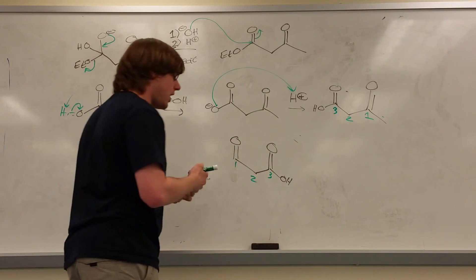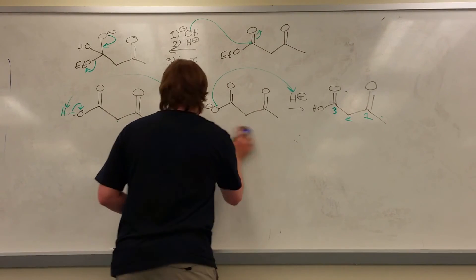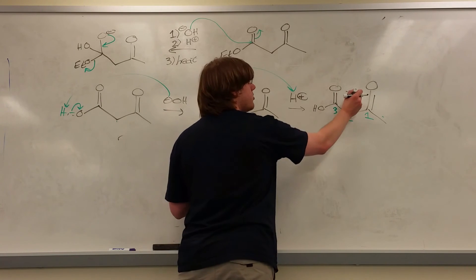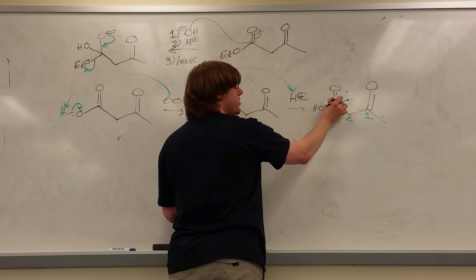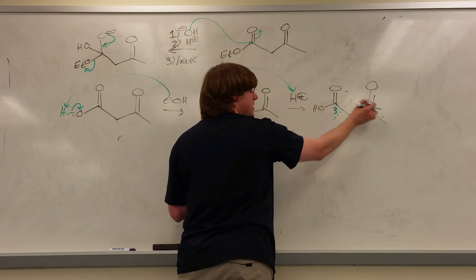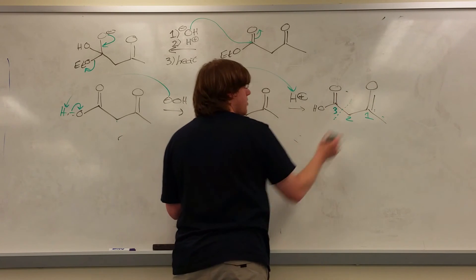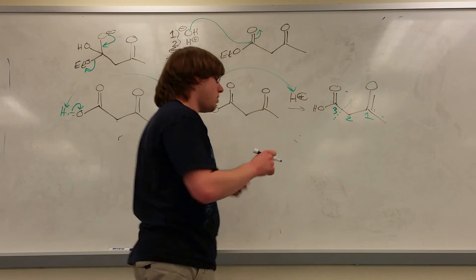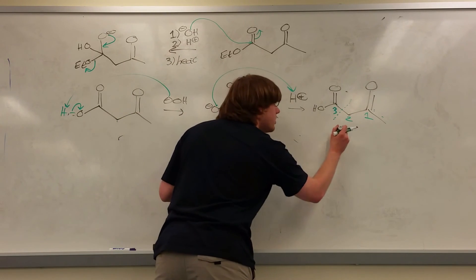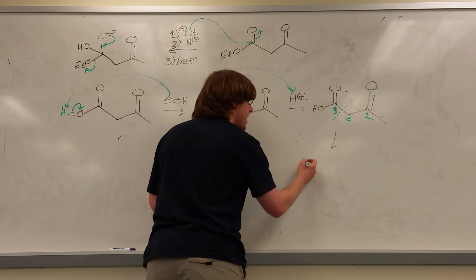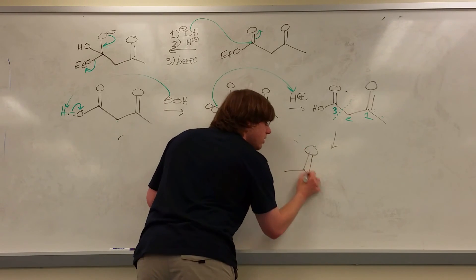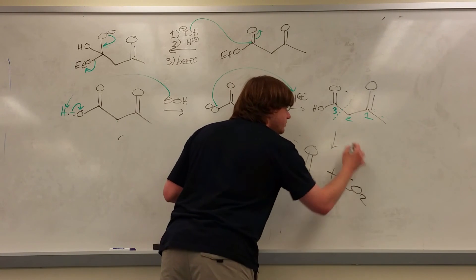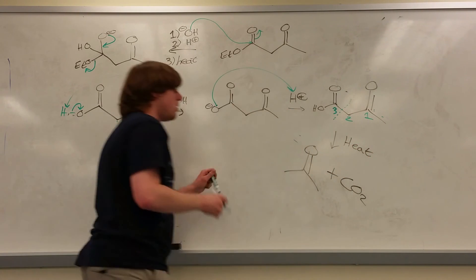So long story short, what happens is whenever you see this in the presence of heat, you're going to draw a dotted line through the bond between two and three, the bond between the carboxylic acid and its alpha carbon that is shared with the other carbonyl. And you're basically just going to erase carbon three and its bond to two. Meaning, what heat will do is chop off that carboxylic acid, leaving you with nothing but that. The carboxylic acid will leave as CO2.